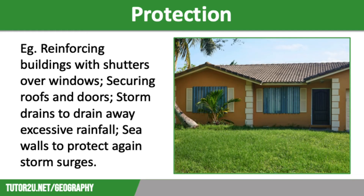In terms of protection, there are lots of things that can be done. Many people protect their homes from tropical storms by reinforcing them — for example, putting shutters across the windows, securing roofs and doors with galvanised metal hurricane straps, building homes on stilts to protect from flooding, and tying down or removing garden furniture and trees close to buildings. We can also build storm drains to remove excess rainfall quickly, build sea walls to protect against storm surges, and restore mangrove forests which absorb excess water.